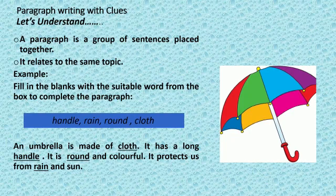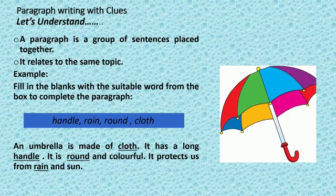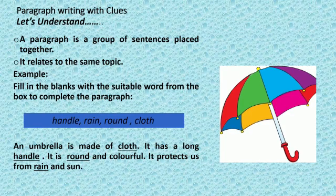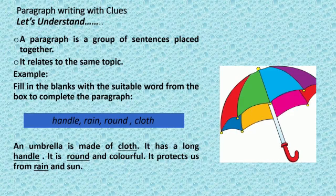Our paragraph will read as: An umbrella is made of cloth. It has a long handle. It is round and colorful. It protects us from rain and sun. Children, note — all the sentences are starting with a capital letter and ending with a full stop. All of them are written one after the other, in continuation — they are not written one below the other, and I have not numbered them. This is very important while writing a paragraph.